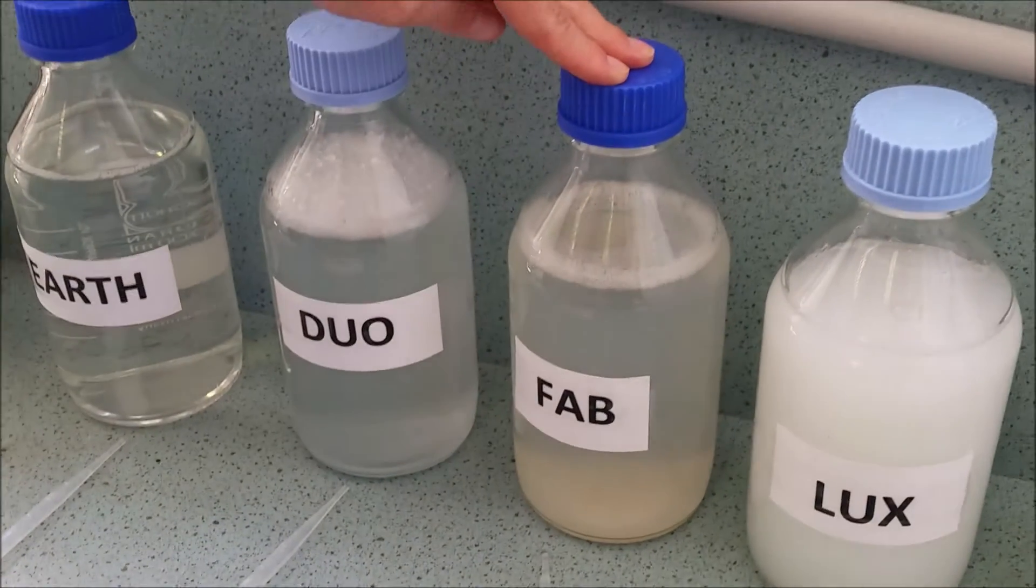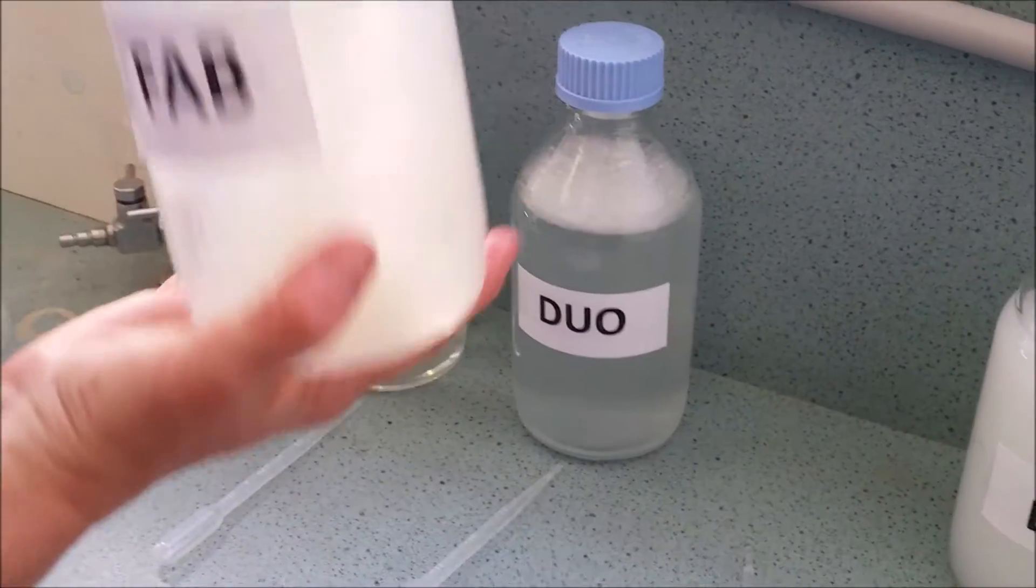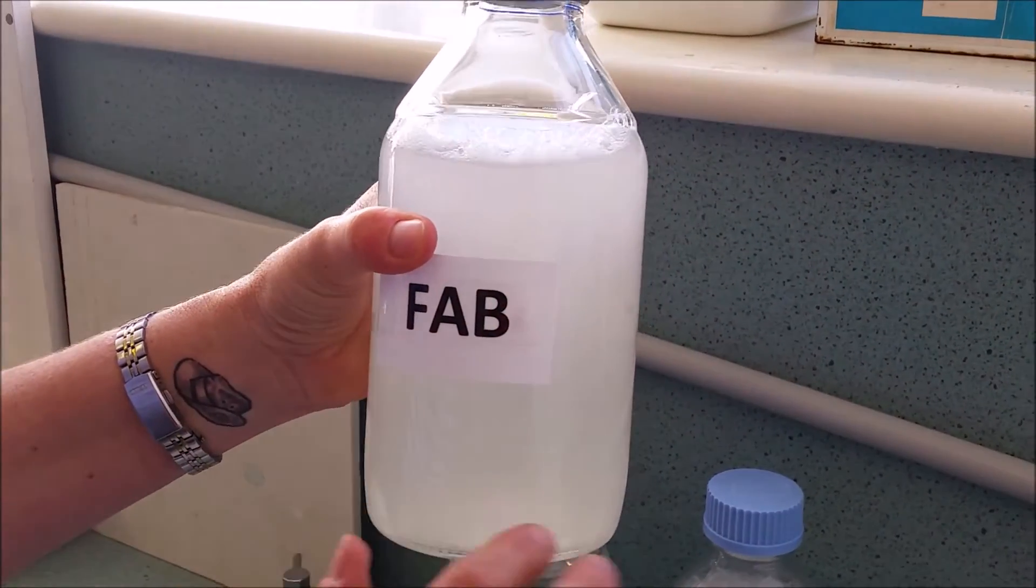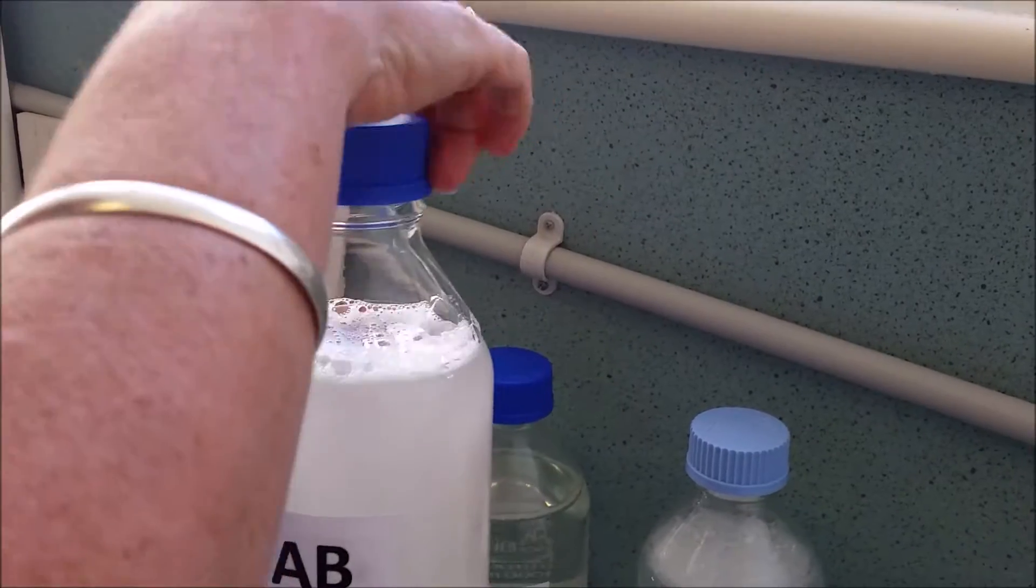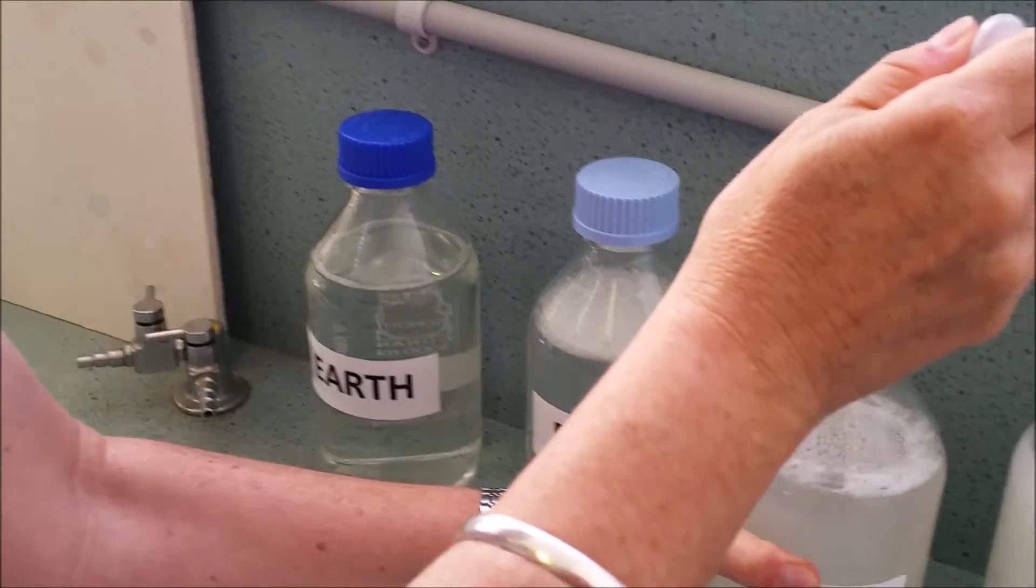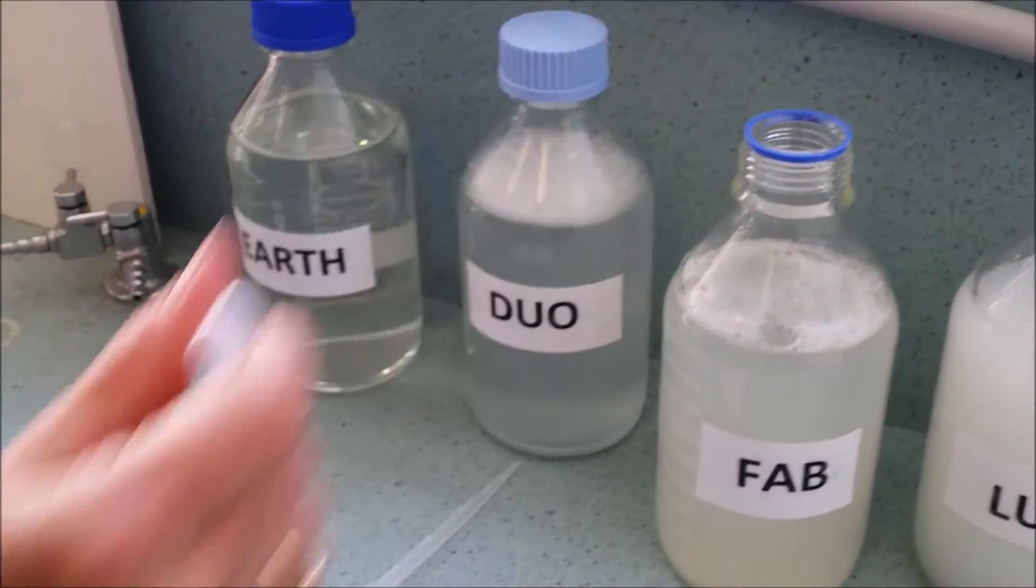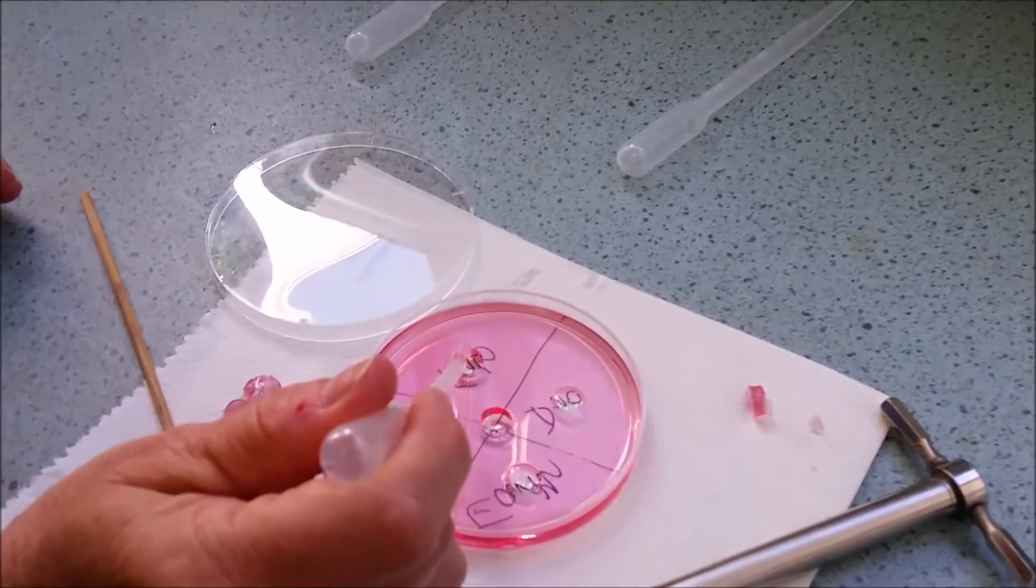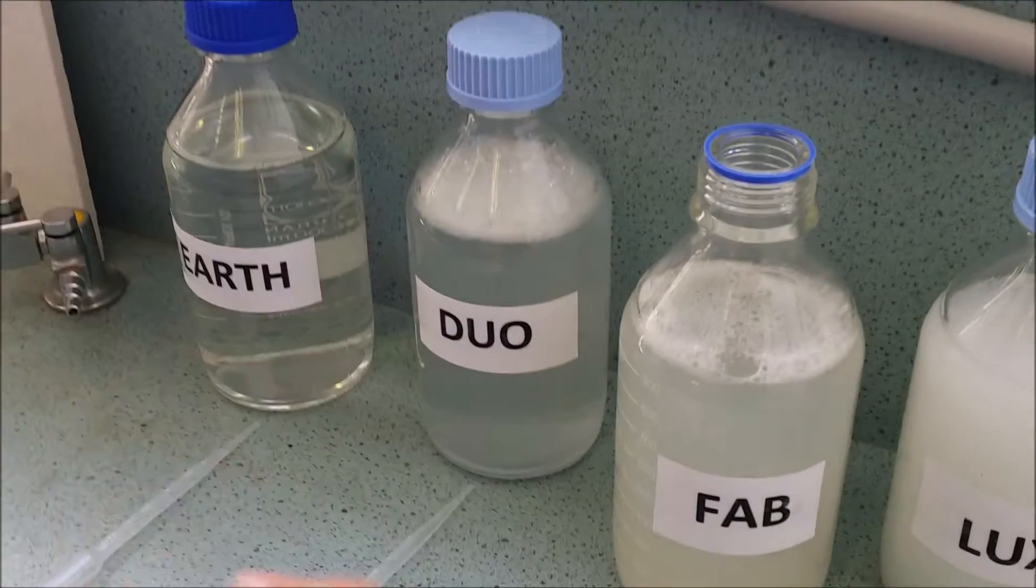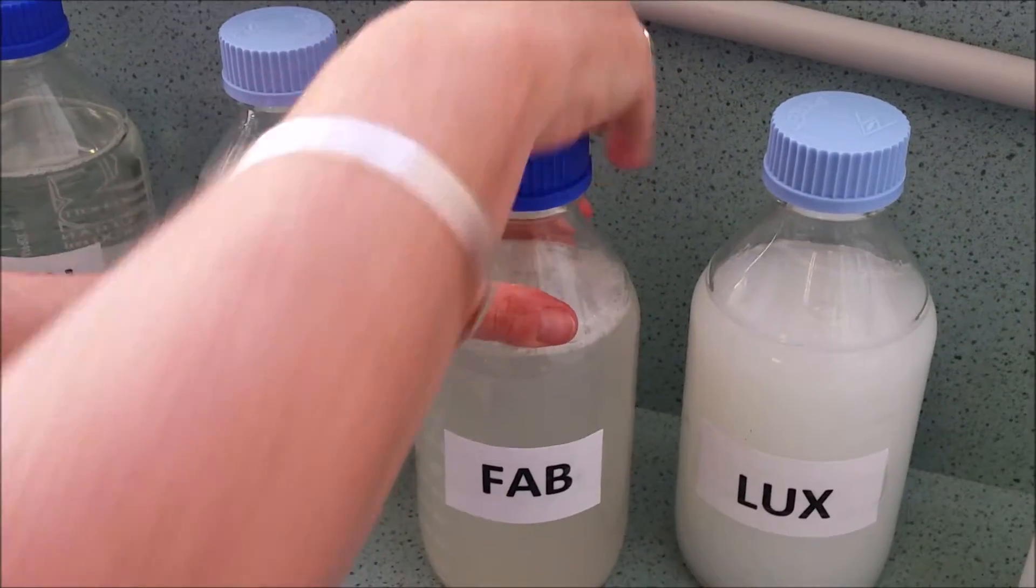Fab is up in this top corner here. Check the lid. Tipping upside down. You can see how the precipitate had settled. It's important to ensure that we get some of that. Counting. One, two, three, four, five. The lid's gone back on.